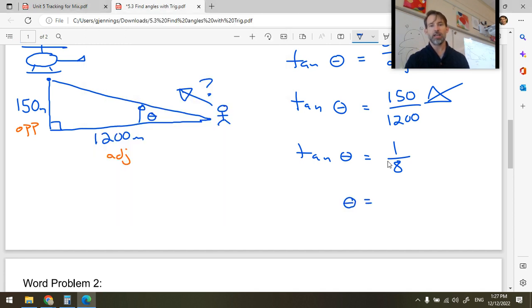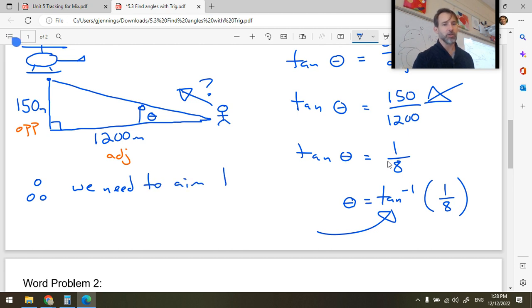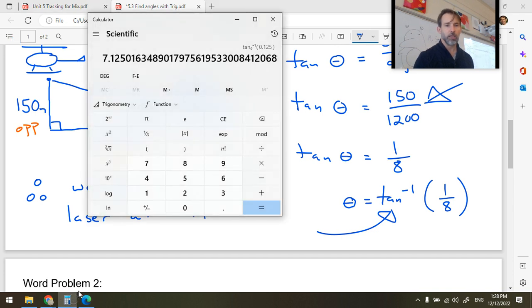So there, what you have is theta equals the inverse tangent of 1 over 8. These inverse trigonometric functions, they're notated this way. It's not the same thing as the reciprocal of tangent. It's not raising it to the power of negative 1. It's the inverse function of tangent. So, that's how we would solve a question like this, and we would finish it by saying, therefore, we need to aim the laser pointer at 7.1 degrees.